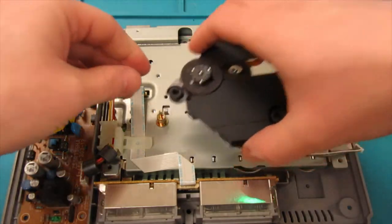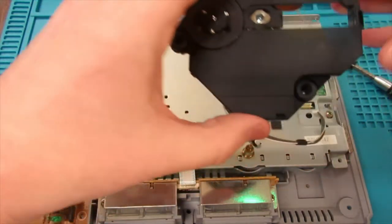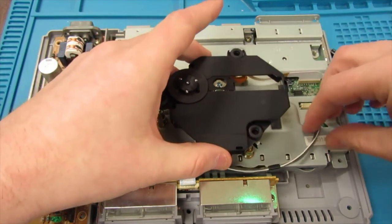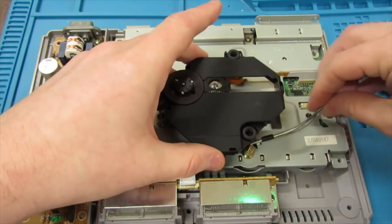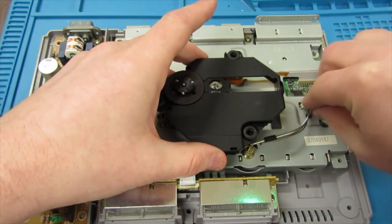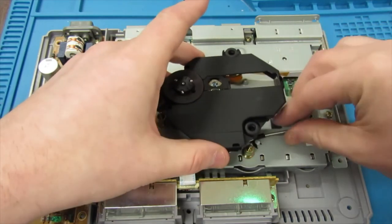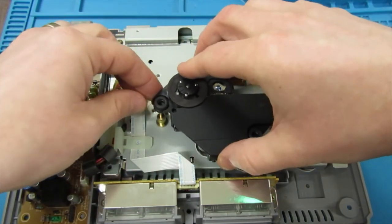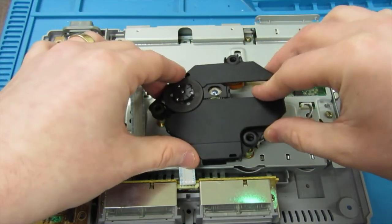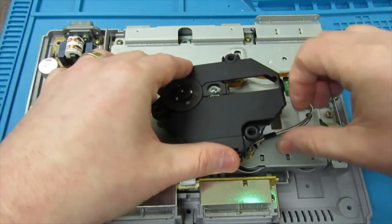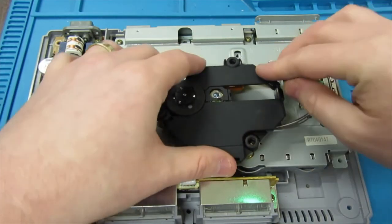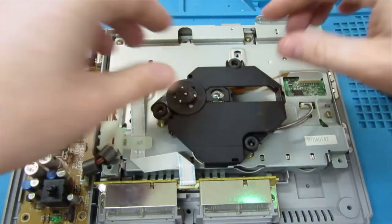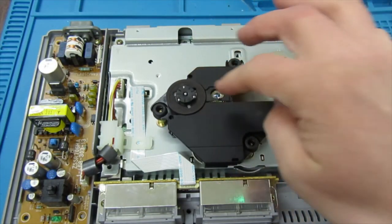The next step then is to just pop it back in the console. You can see this one spins freely, but the old one wouldn't.